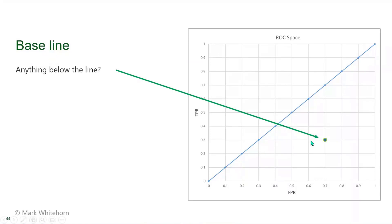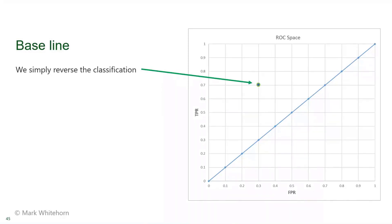As your algorithm gets bad it leans toward this baseline. Anything above it is better than random - may not be good, but better than average. What if you got something below the line? That would mean when you show it a tractor it's more likely to say 'not a tractor.' If it was that bad, you'd just reverse its classifications - believe the opposite of what it tells you - which would move it into the positive sphere. So you'll never really see anything below this line.